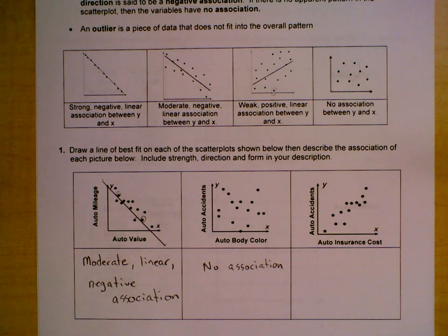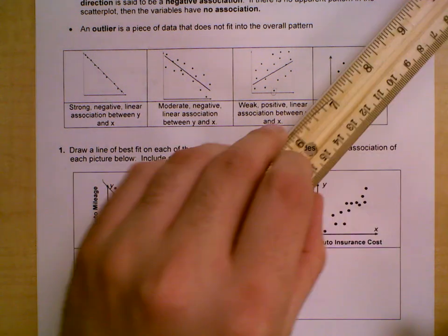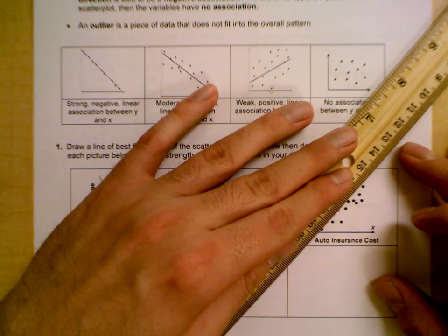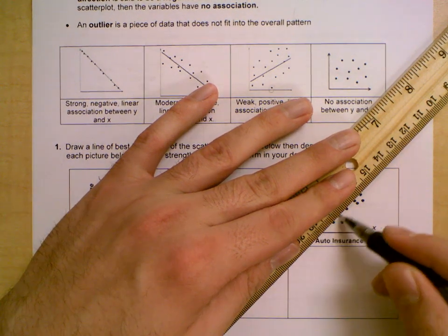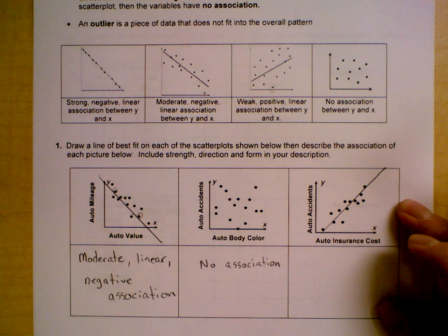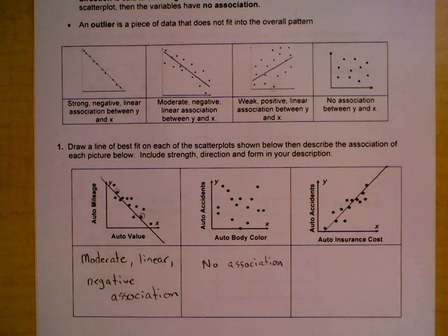And the last one, we've got auto accidents on the Y and auto insurance cost. Go ahead and tell me what you think the shape is, the strength is, and the direction. All right, so first we've got to draw that line of best fit. I'm going to go right through here. Okay, there's my line of best fit.